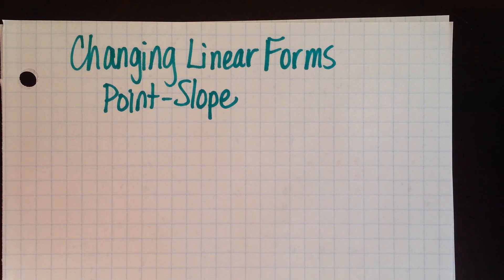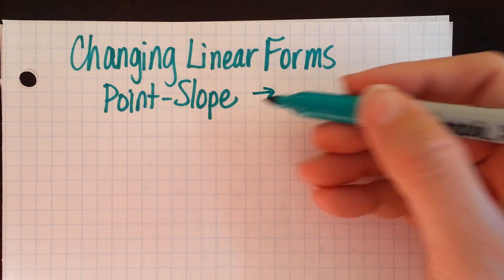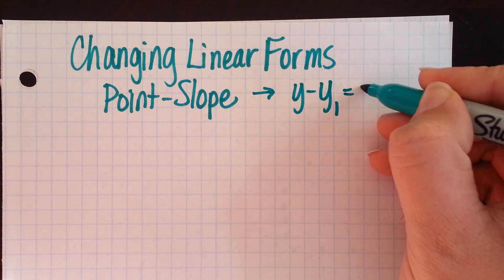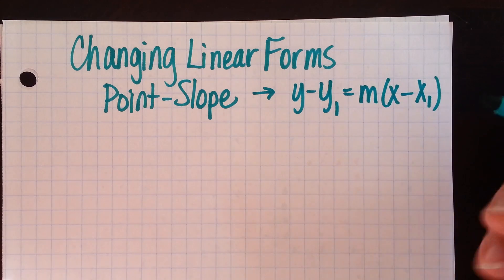In this video, we're interested in changing linear forms from point-slope into something else. Remember, point-slope is the one that looks like y minus y1 equals m times x minus x1. So first, let's start with an example.